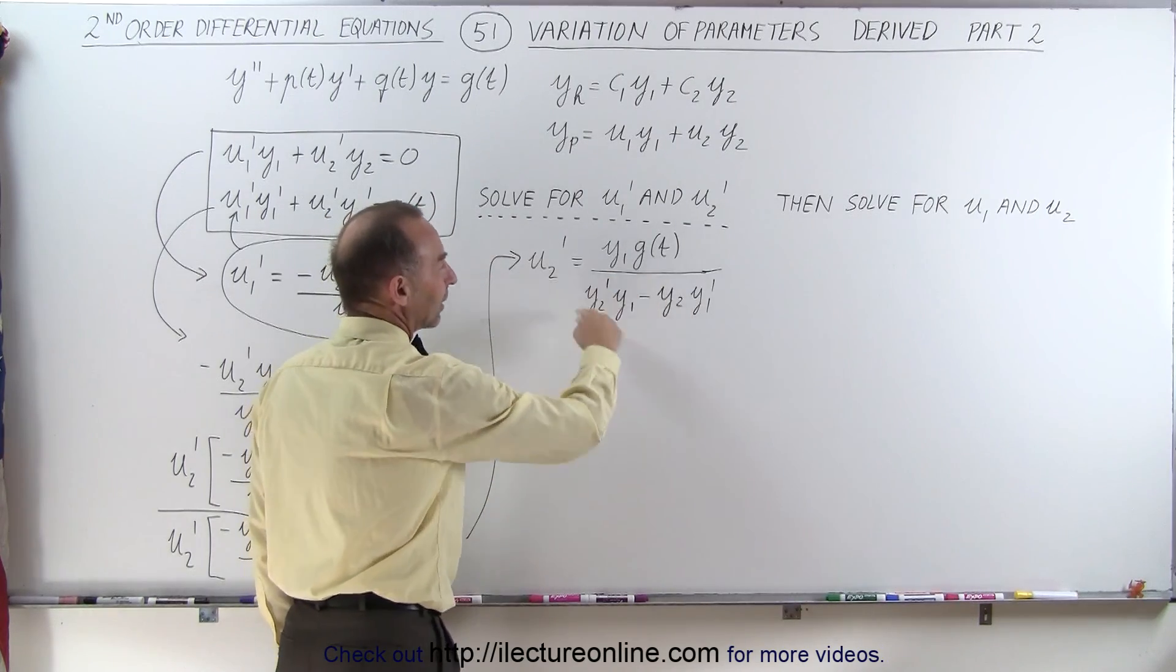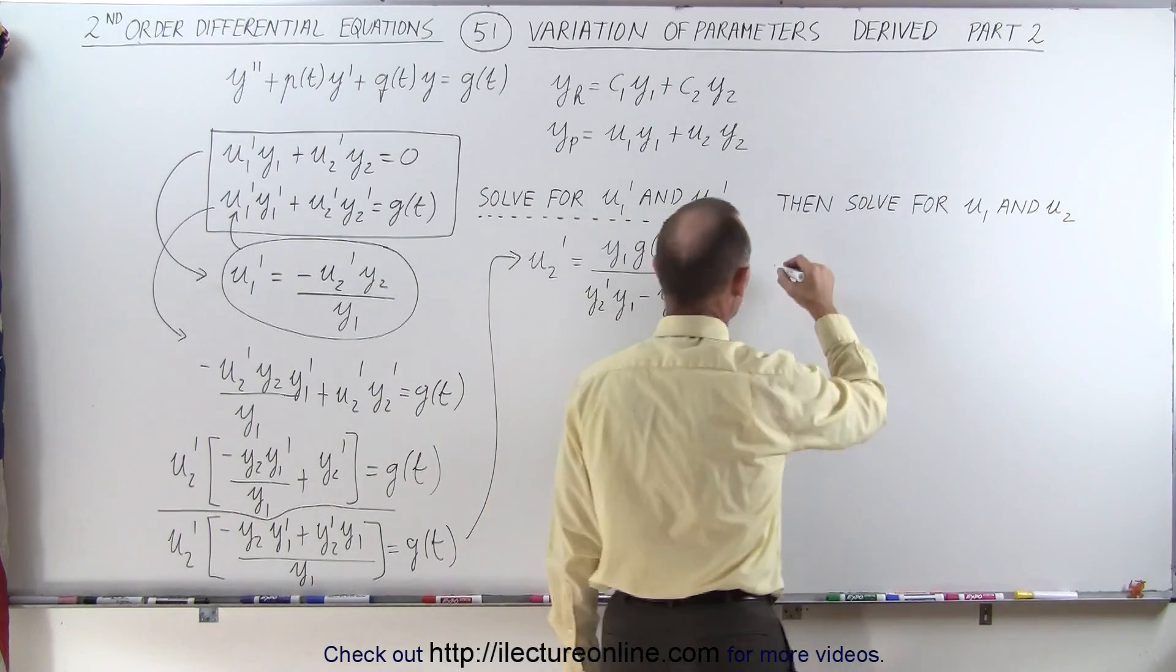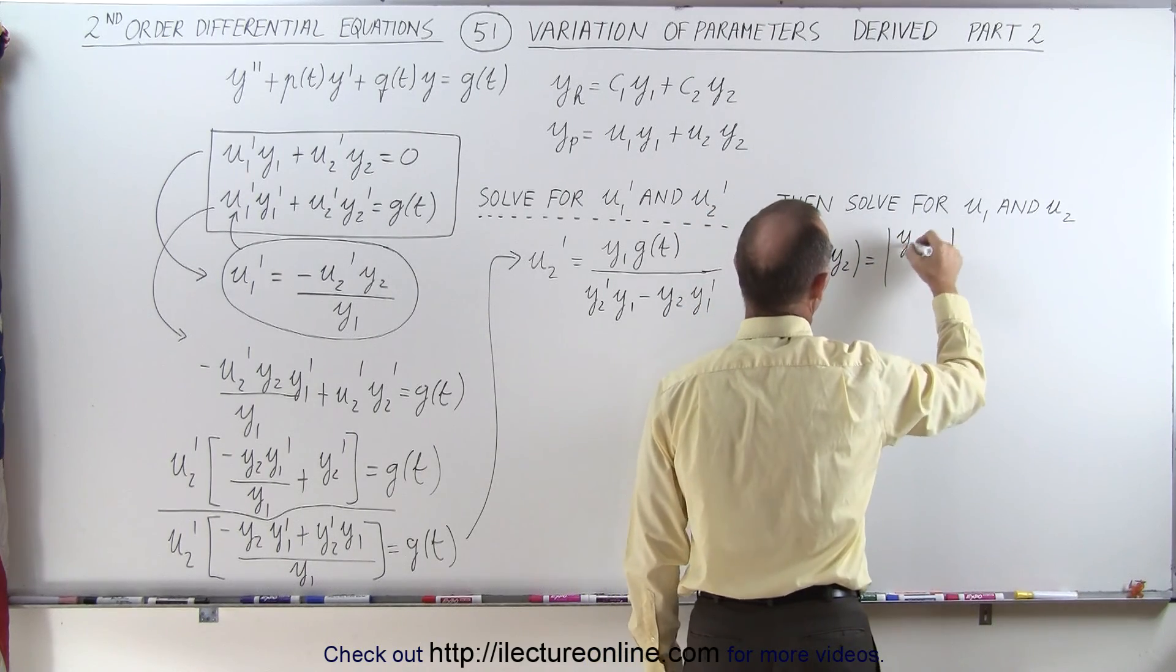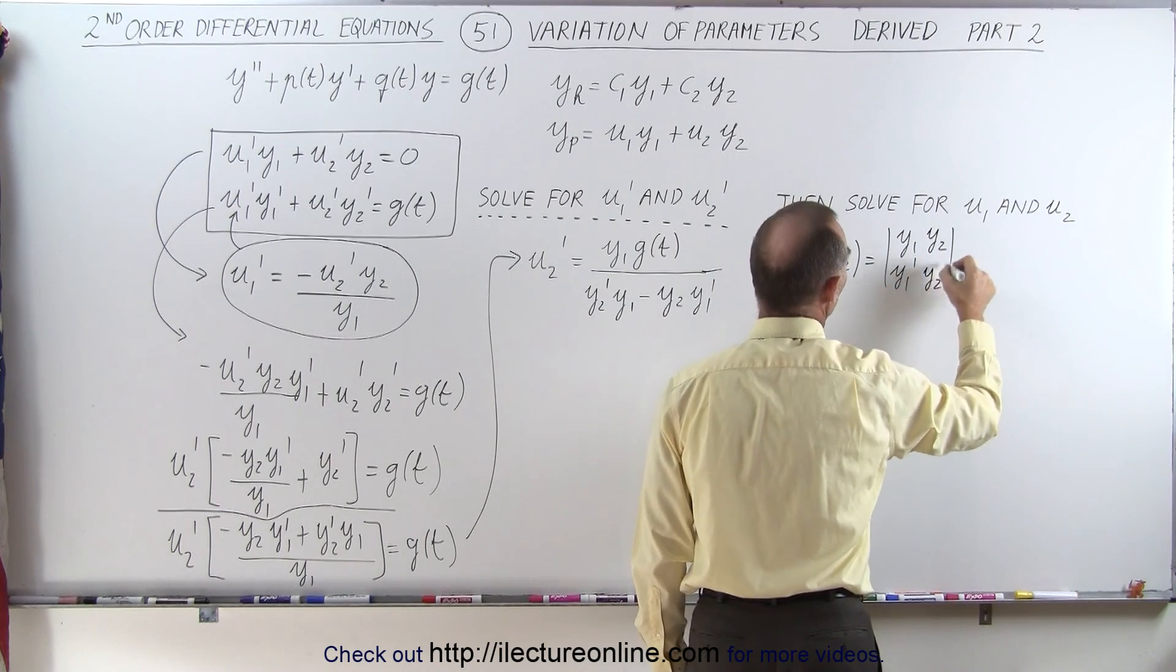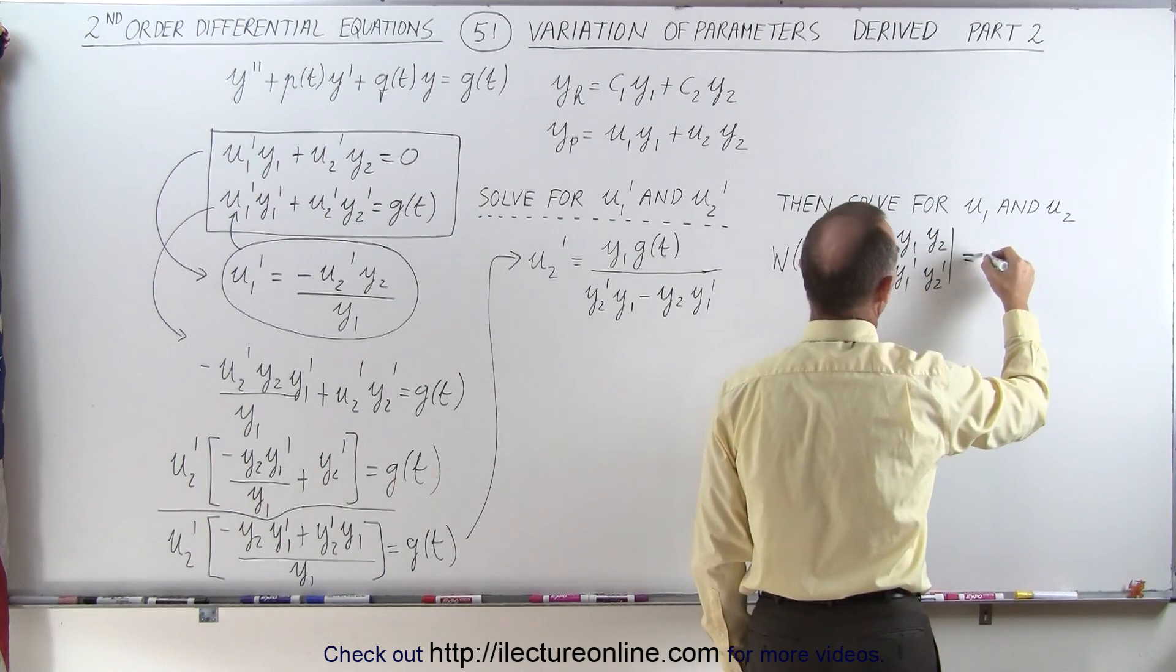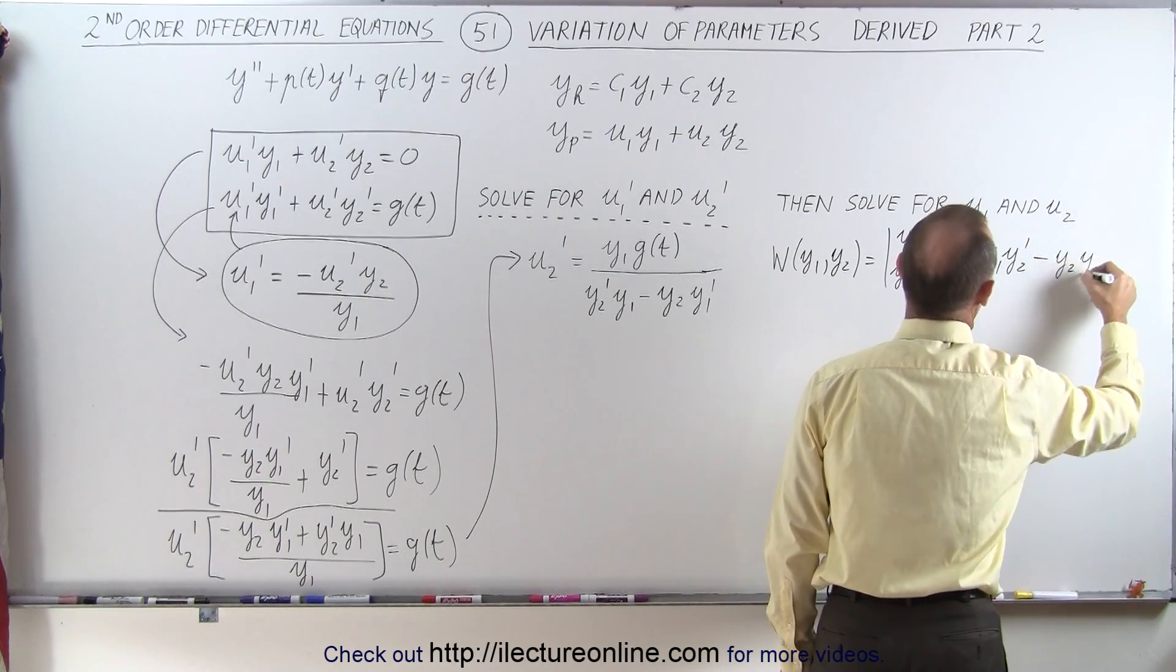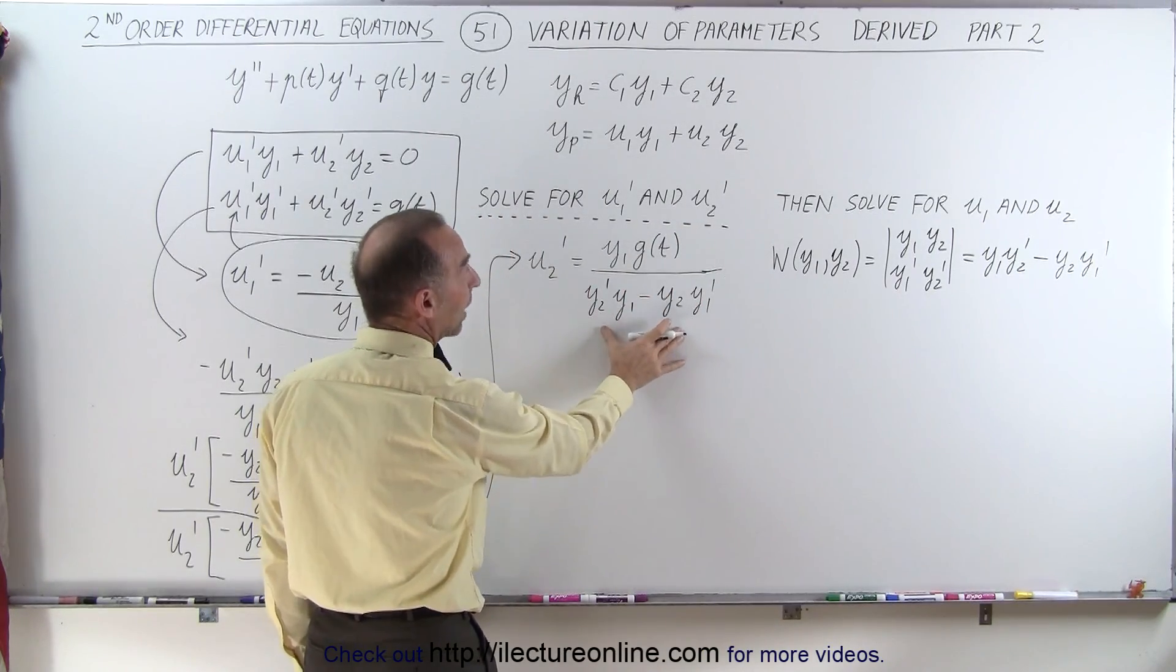Now when we look at the denominator, that looks very familiar. That looks like the Wronskian of y1 and y2, because the Wronskian of y1 and y2 are defined as the determinant of, in the first row, y1 and y2, and the second row, y1' and y2', which means that this is equal to the product of those two terms, y1 y2', minus the product of those two terms, which is y2 y1'. And if you notice, that should be exactly the same as what we have in our denominator here.